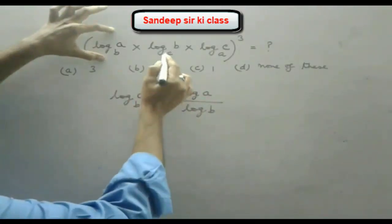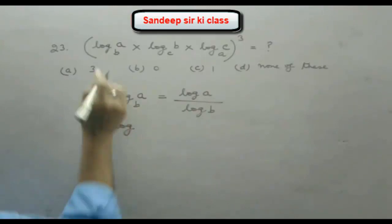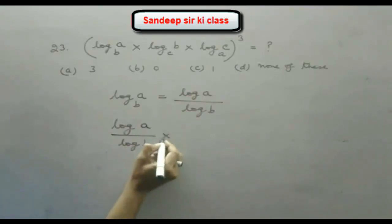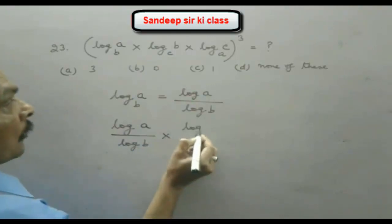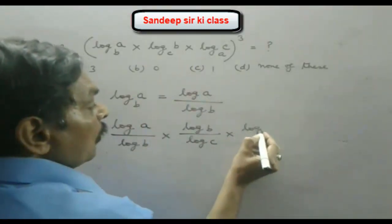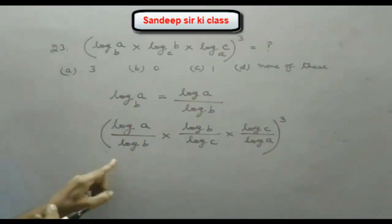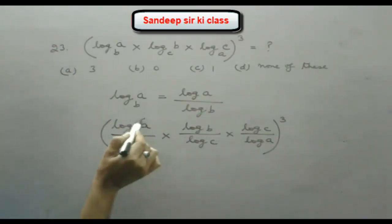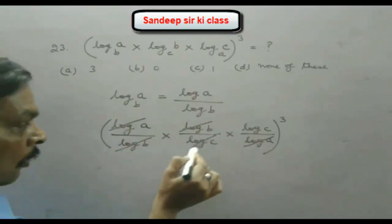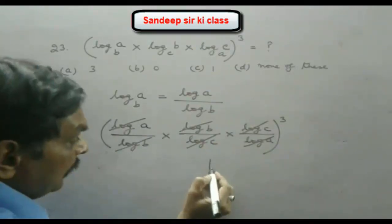Similarly, the other two terms can also be written: the second term becomes log b upon log c, and the third term becomes log c upon log a. The expression reduces to this product inside a cube. Now log a and log a cancel, log b and log b cancel, and log c and log c cancel, so inside the bracket we obtain 1.